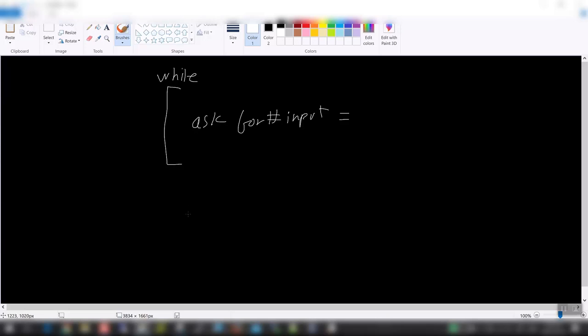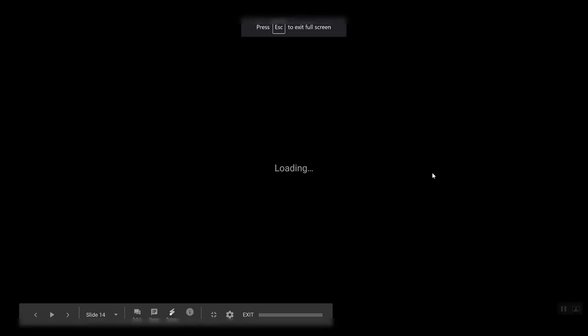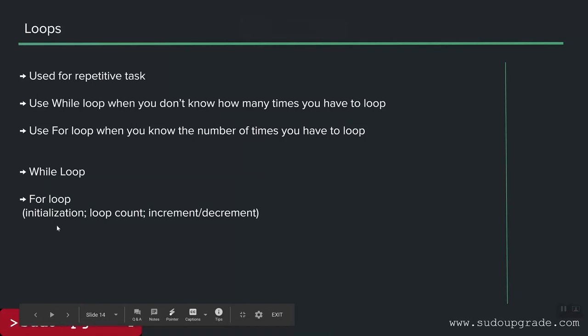A for loop is used when you know how many times you're going to iterate — for example, iterating through an array of known size. There's typically some initialization, a condition, and then incrementing or decrementing. Python uses a different syntax for this, which we'll cover in the next lecture.